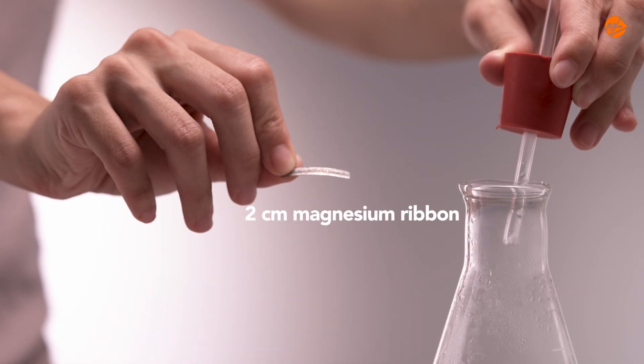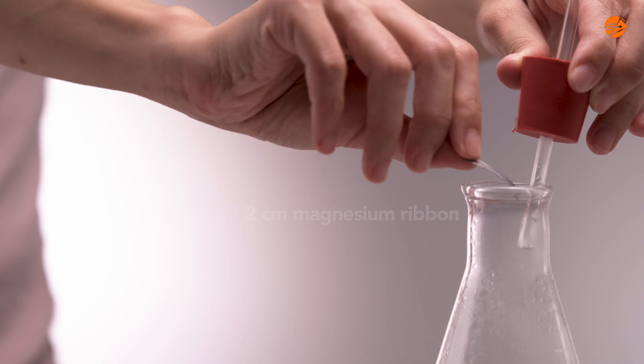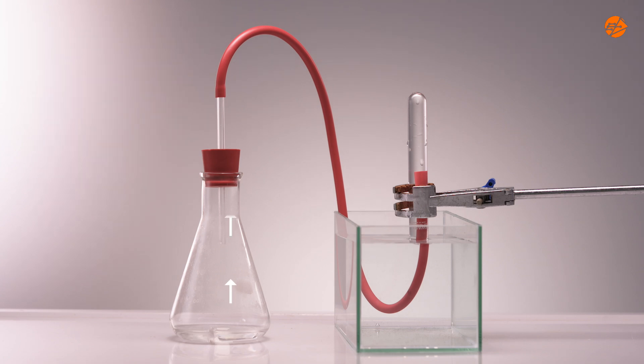Add a 2 cm magnesium ribbon into the acid and quickly insert the bung into the conical flask. The reaction starts and the gas travels through the delivery tube towards the test tube in the water trough, where it displaces the water.